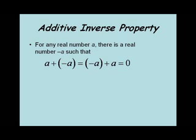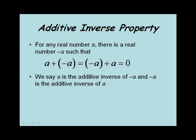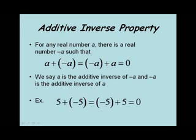Now we'll take a look at the inverse properties, starting with the additive inverse property. This says for any real number a, there's a real number negative a, such that a plus negative a equals negative a plus a equals 0, the additive identity element. We say a is the additive inverse of negative a, and negative a is the additive inverse of a. For example, 5 plus negative 5 equals negative 5 plus 5, which equals 0. In this case, 5 was a, and negative 5 is negative a.